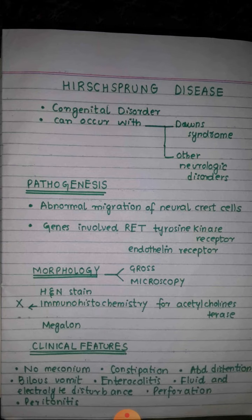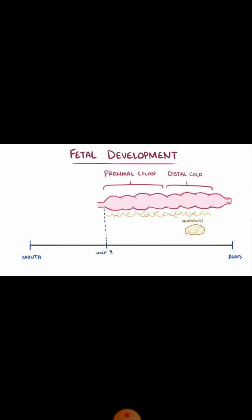What is the pathogenesis of Hirschsprung disease? Normally during embryogenesis and embryonic development, we have neural crest cells that migrate from the proximal colon to the distal colon. In Hirschsprung disease, the migration of neural crest cells from the proximal to the distal colon is interrupted for unknown reasons. The neural crest cells stop and are not able to reach the distal colon.